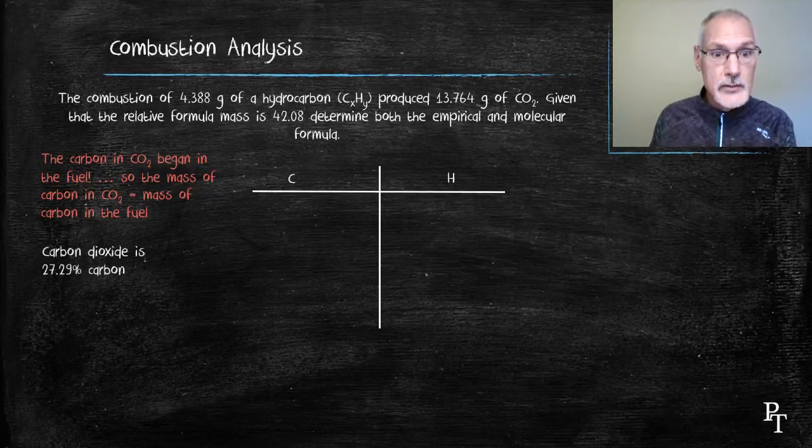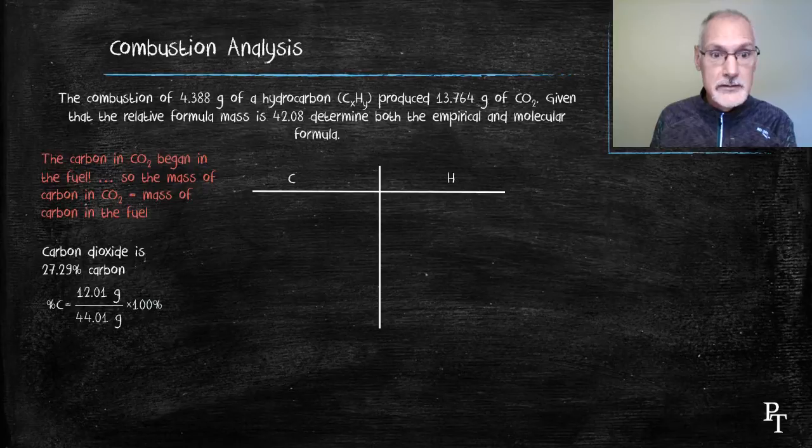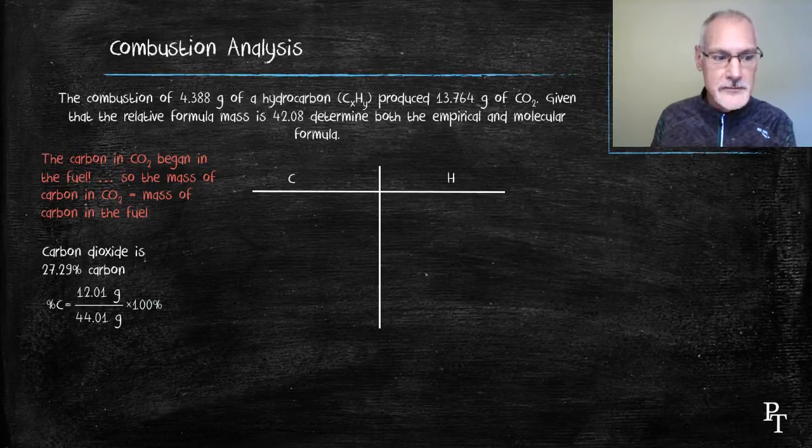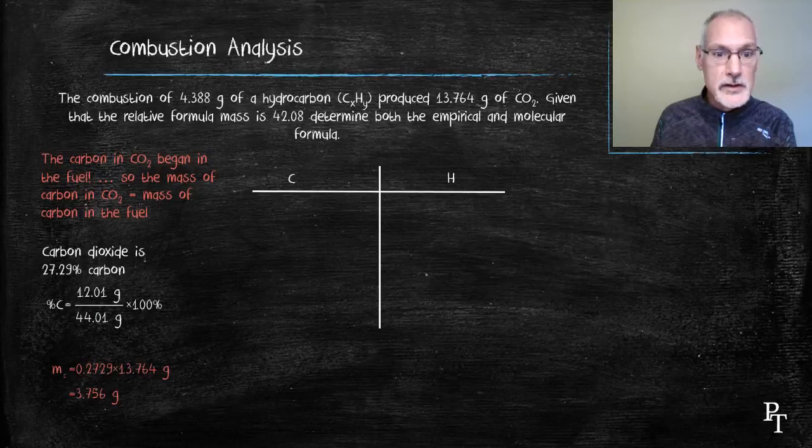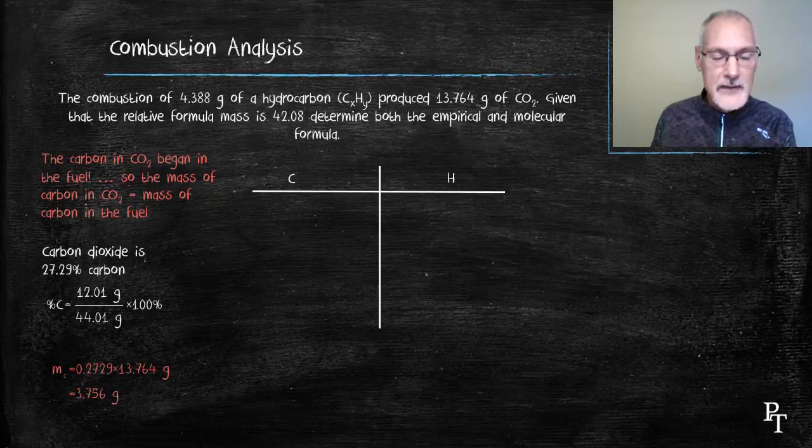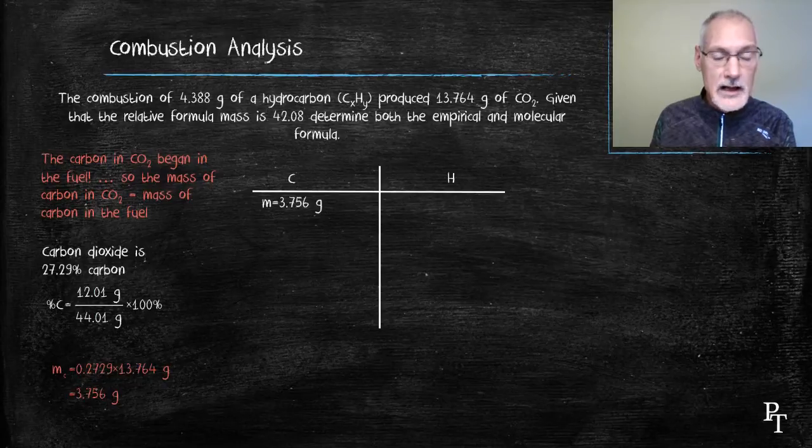Carbon dioxide is around 27% carbon. You could watch an earlier program to review how to take a formula and determine its percent composition. What I'm going to do now is take 27.29% of the 13.76, and I arrive at 3.756 grams. That's the mass of carbon in my carbon dioxide. That must have began its journey as the carbon in the fuel. So I know the mass of carbon that was in my sample.